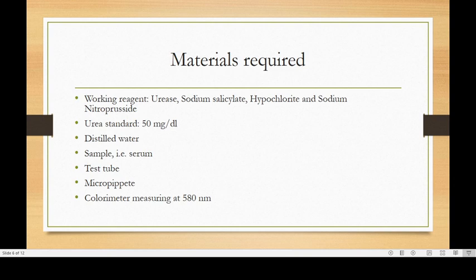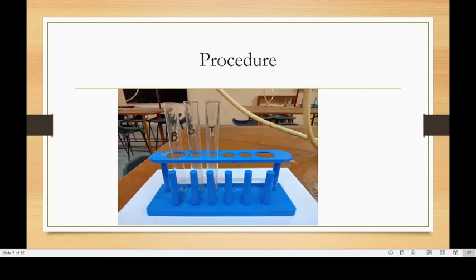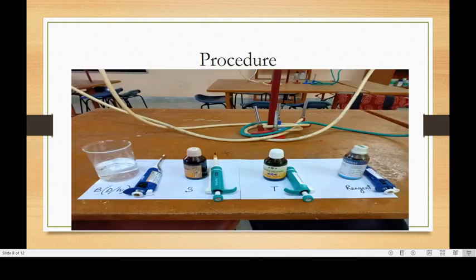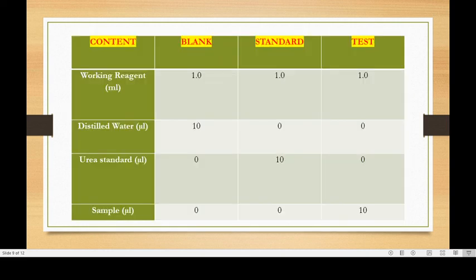For the procedure, first take three test tubes and mark them as B for blank, S for standard, and T for test. Take distilled water as blank in a beaker, then the standard urea solution, the sample, and the reagent. Also take different micropipettes to pipette out all these reagents.